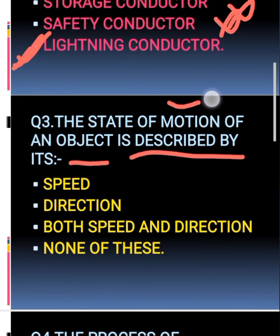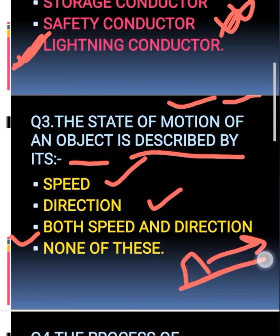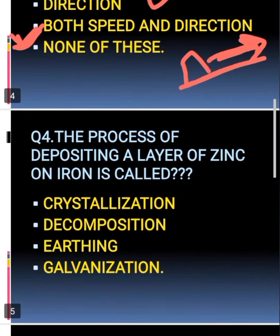The third question: the state of motion of an object is described by which thing? When an object is moving, speed tells you how fast it moves, and direction tells you where it is going. So the correct answer is both speed and direction.